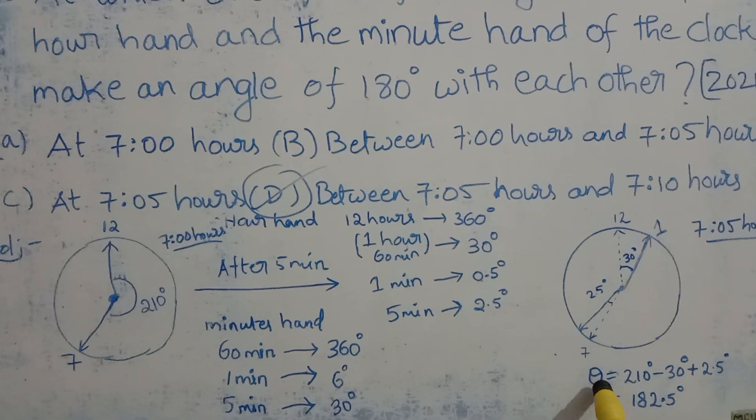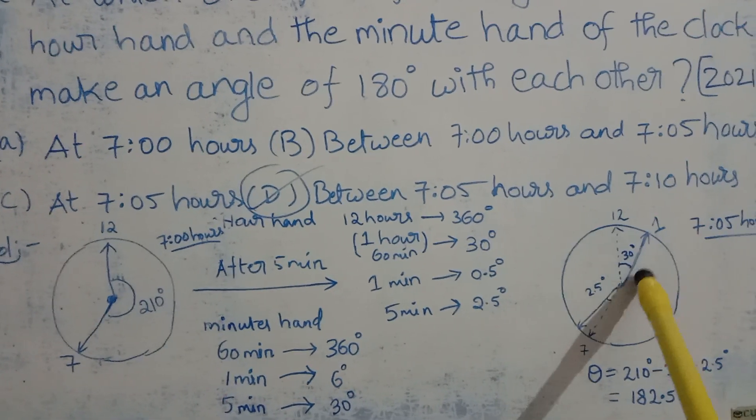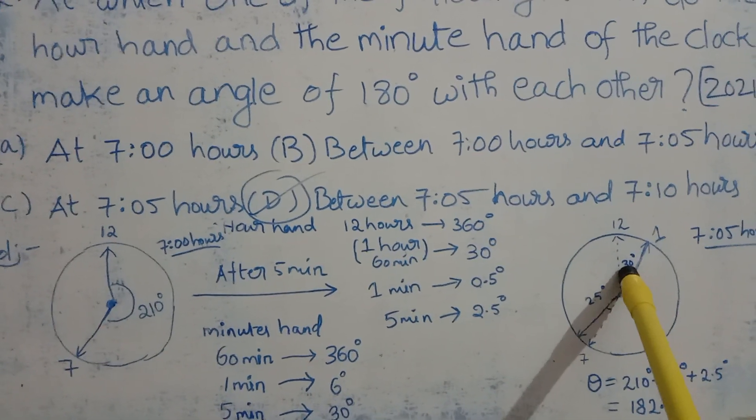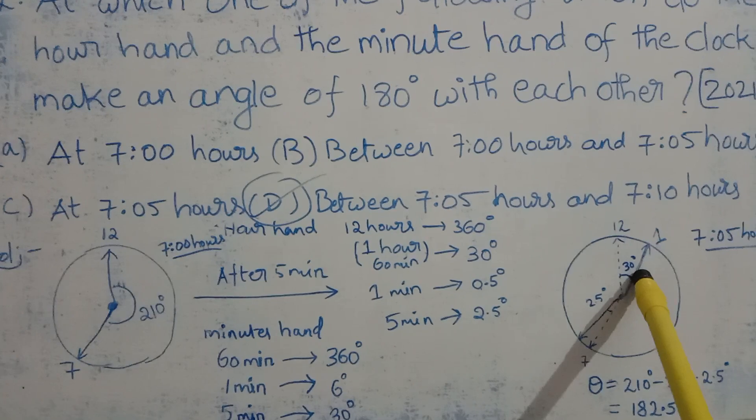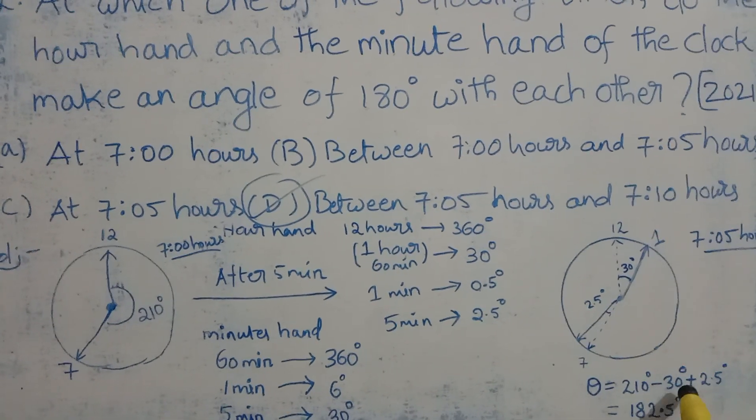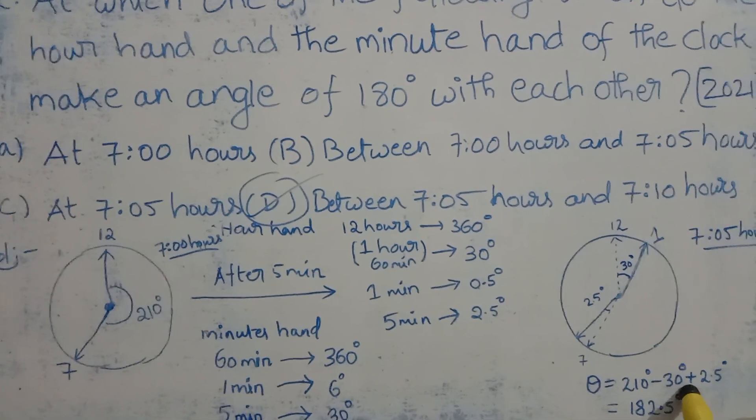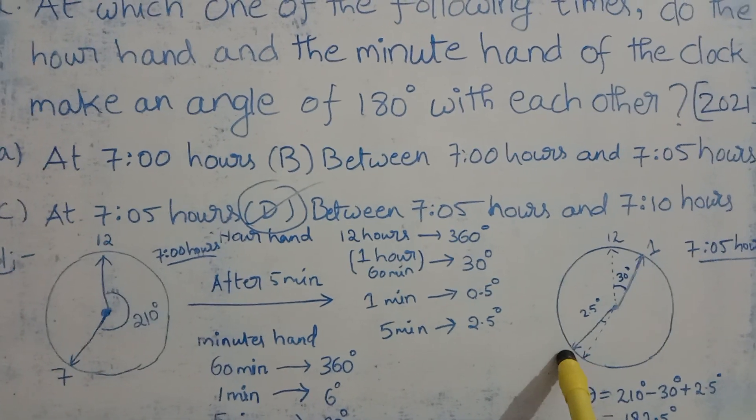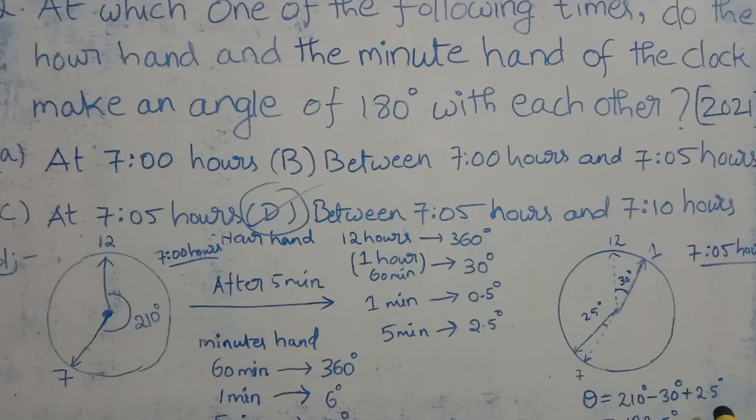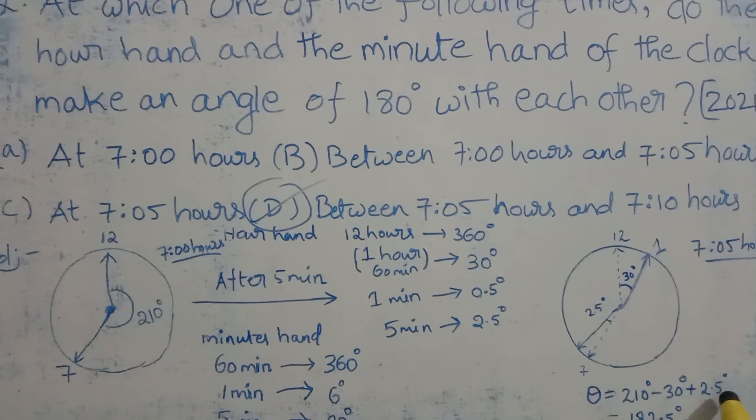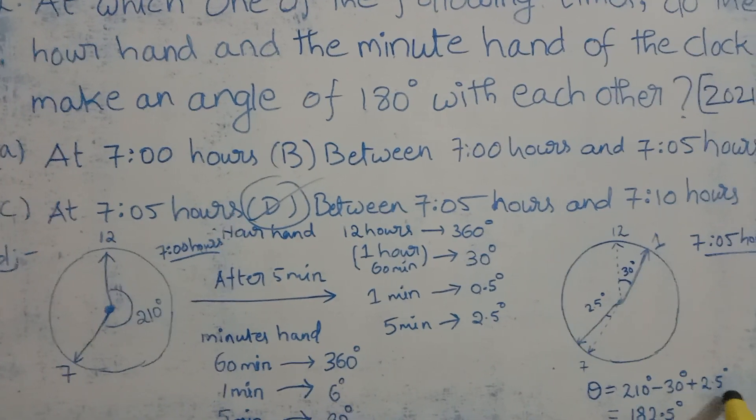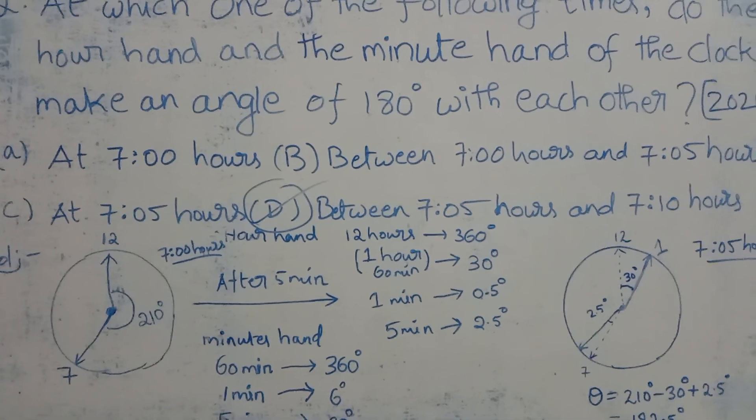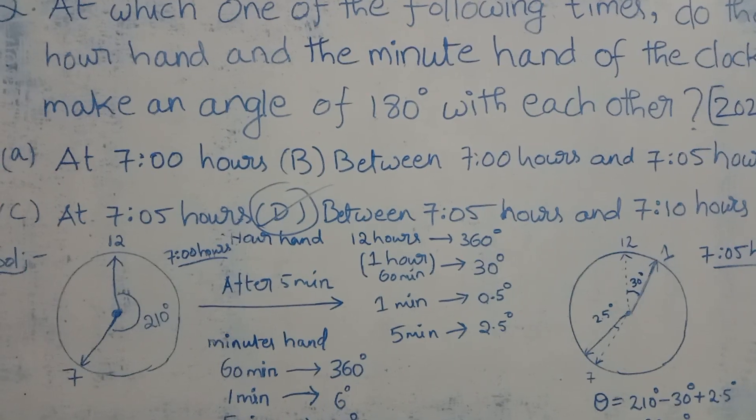The resultant angle calculation: initially the angle is 210 degrees. This 30 degrees decreases that angle, so I am doing minus here. The angle swept by the hour hand will add to the angle, so I am adding 2.5 degrees to it. The calculation gives 182.5 degrees.